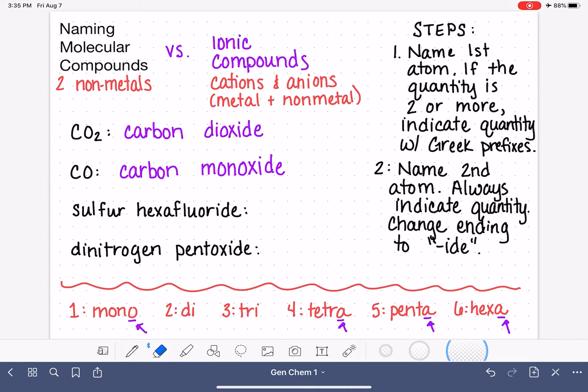Now the reason that we have to use prefixes to indicate quantity in these molecules' names is because there's a lot of variability in the way that two types of atoms can come together. CO2 versus CO, there's two options on how carbon and oxygen can combine. And so the quantities of the atoms are not implied by the name in the same way that they are with ionic compounds.